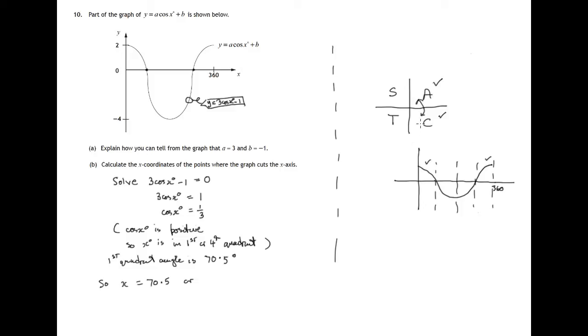There's the first quadrant angle, 70.5, 360 minus. Or there's your 70.5, 360 minus 70.5.